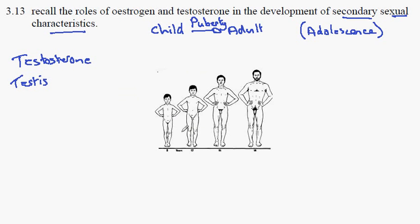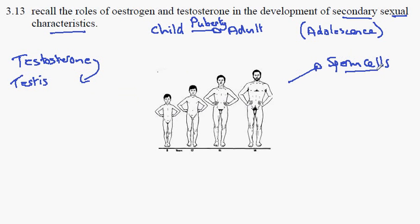First of all, we would see a production of sperm cells. Testosterone will bring about an effect on the testes itself to produce sperm cells. There will also be a growth and development of the sexual organs — the penis and the testes.